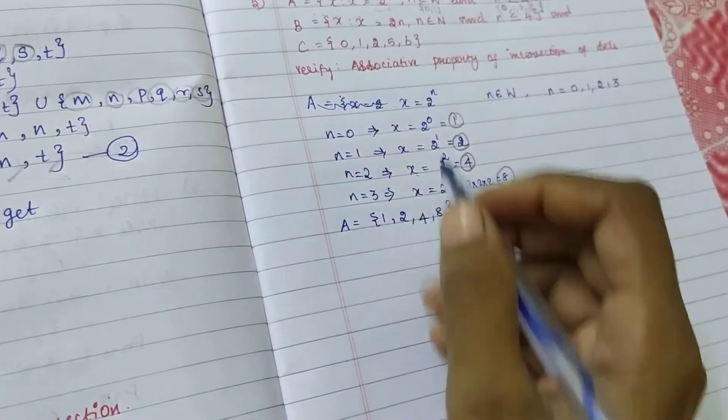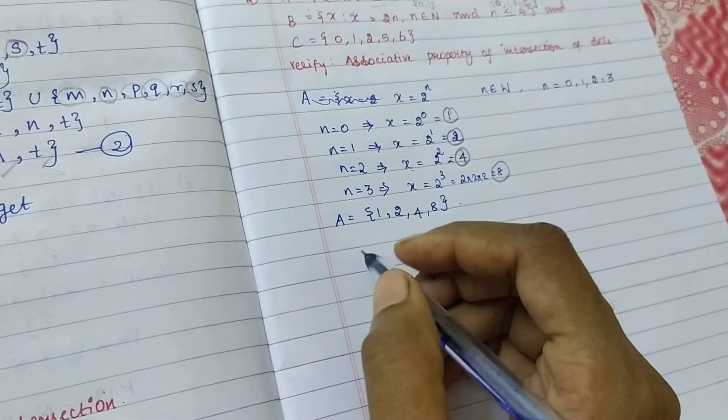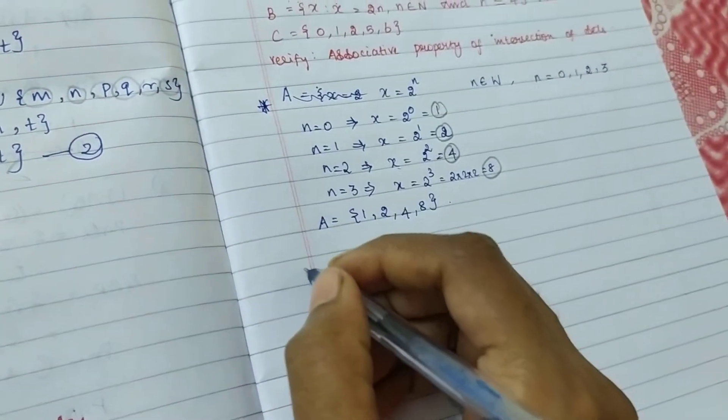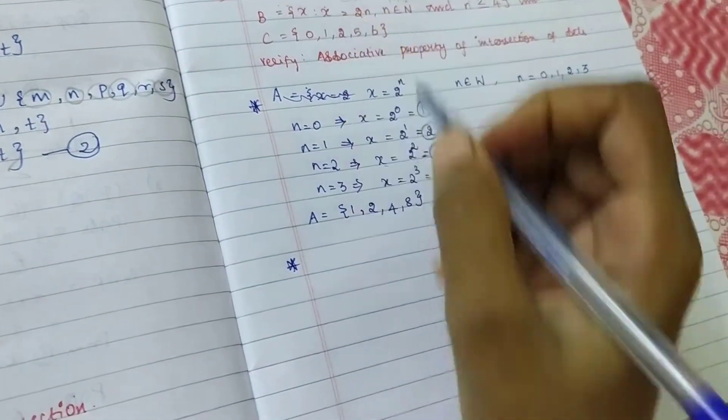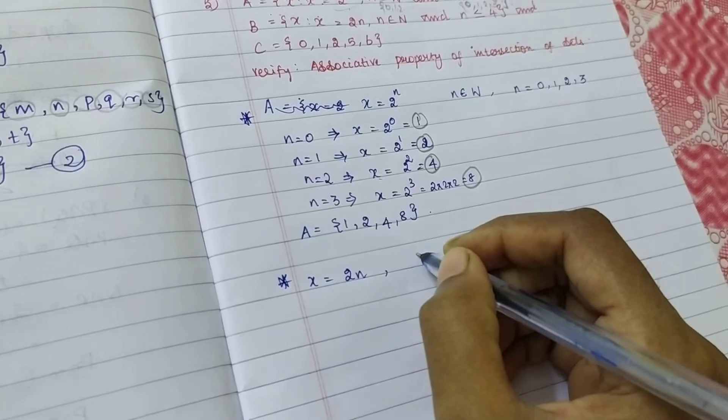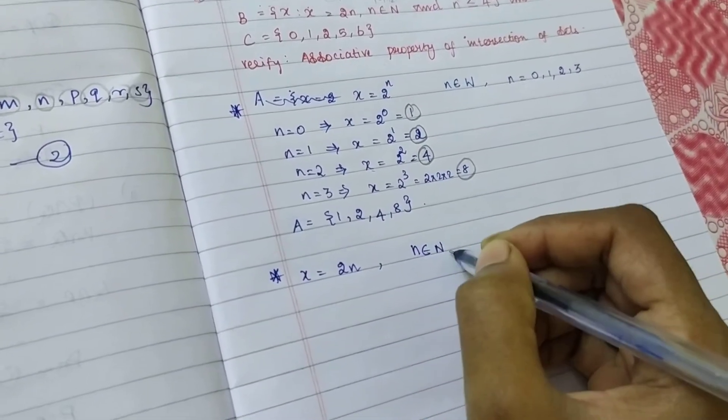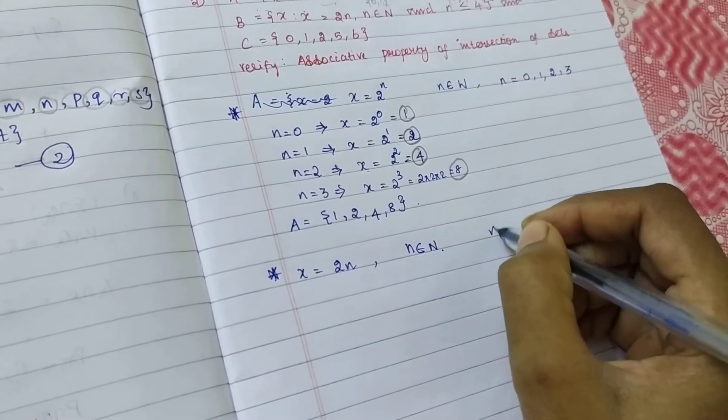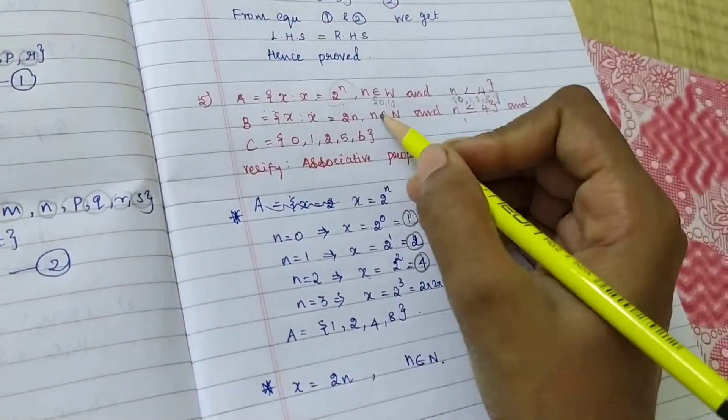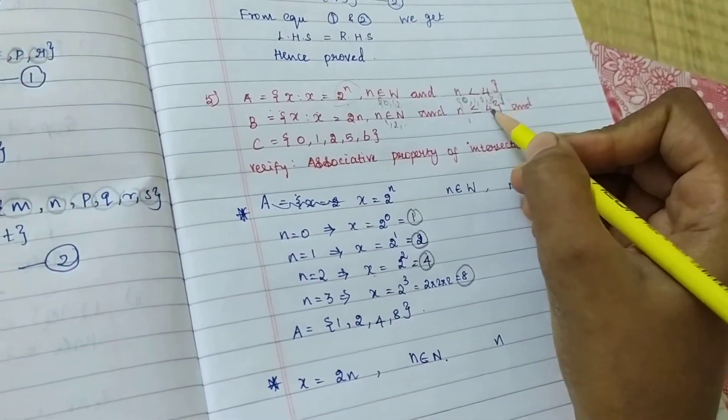For set B, what do they mention? For set B, X equal to 2N. But, N in a natural number. N in a natural number means start from 1, 2, 3, etc.